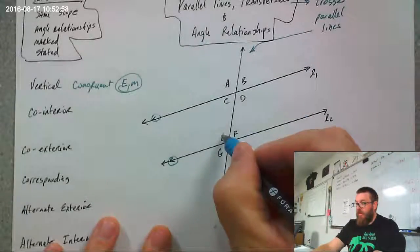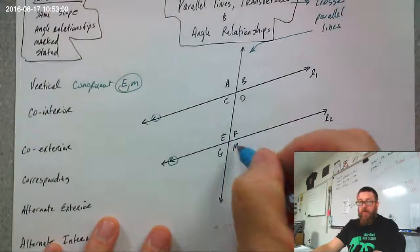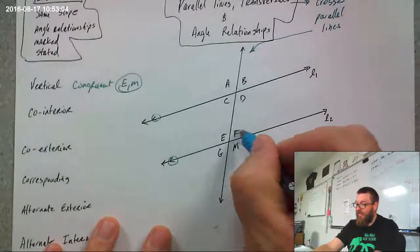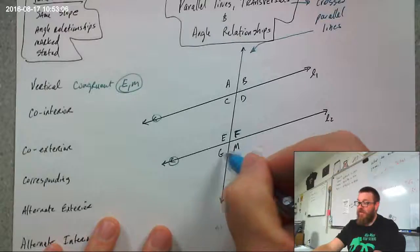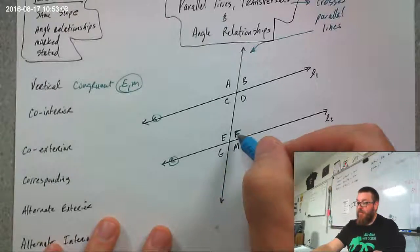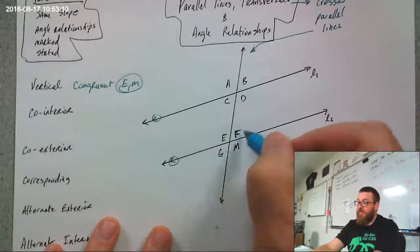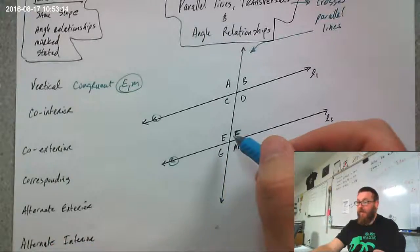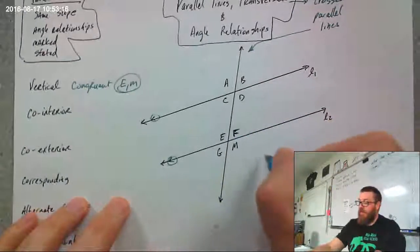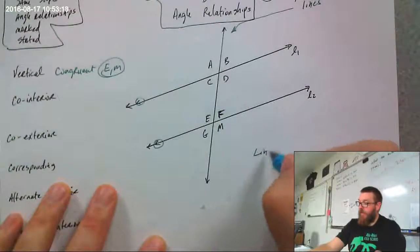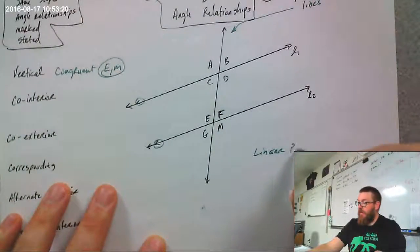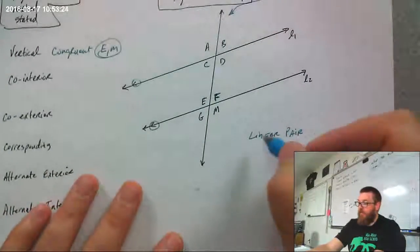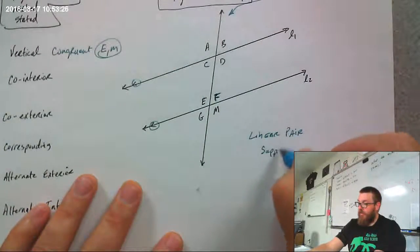E and M are a pair — they're congruent. F and G are also vertical, so those two are congruent to each other. However, E and F are not congruent. In fact, E and F make what are called a linear pair, because together the two angles make a straight line. Linear pairs are always supplementary.